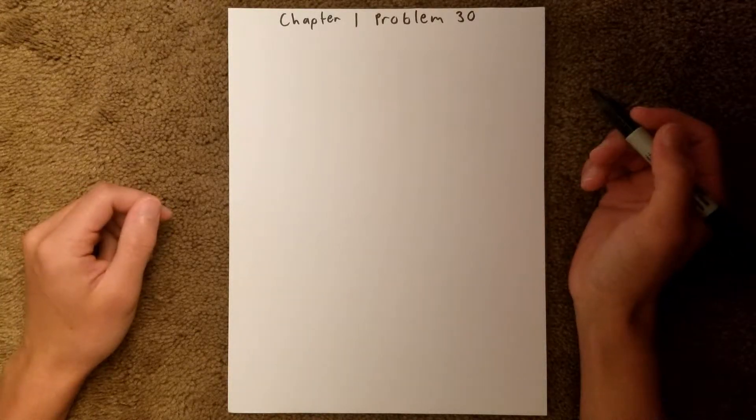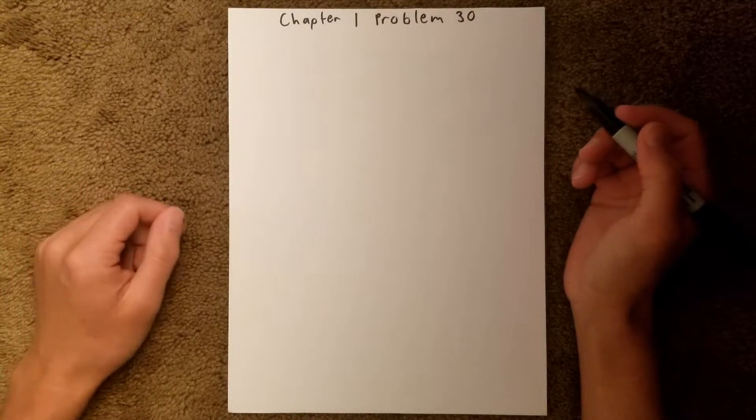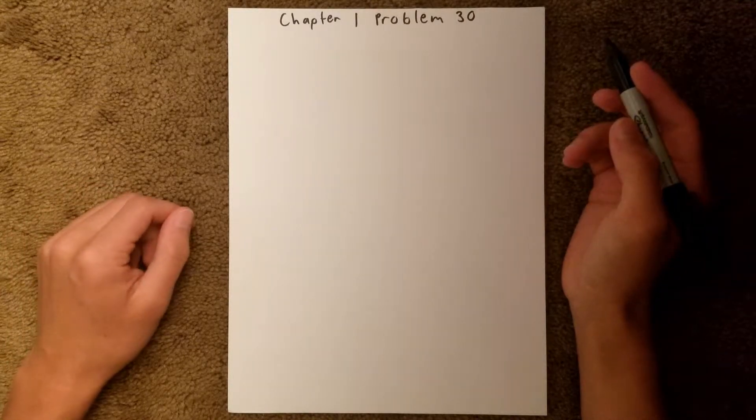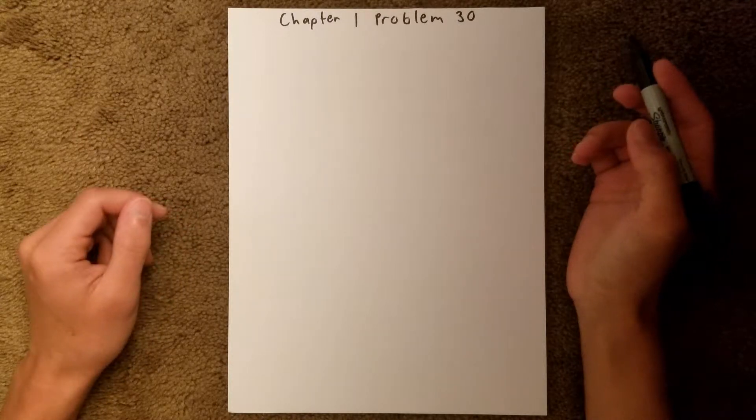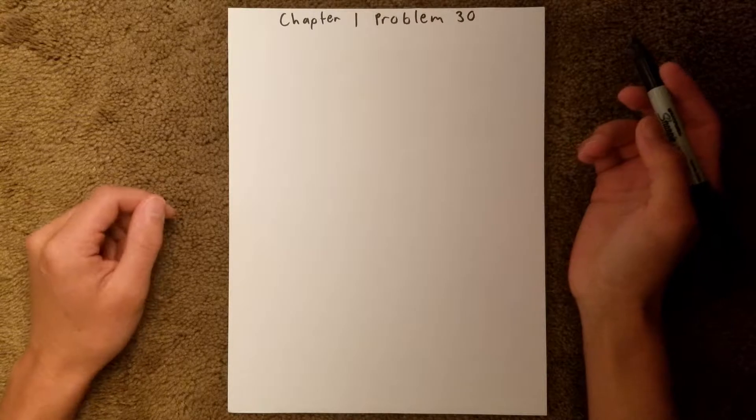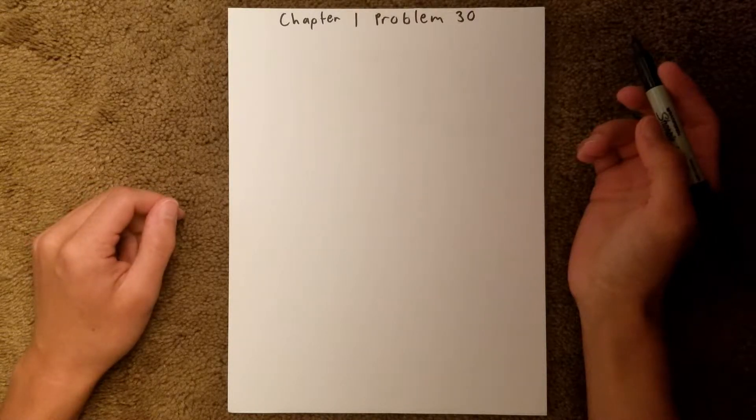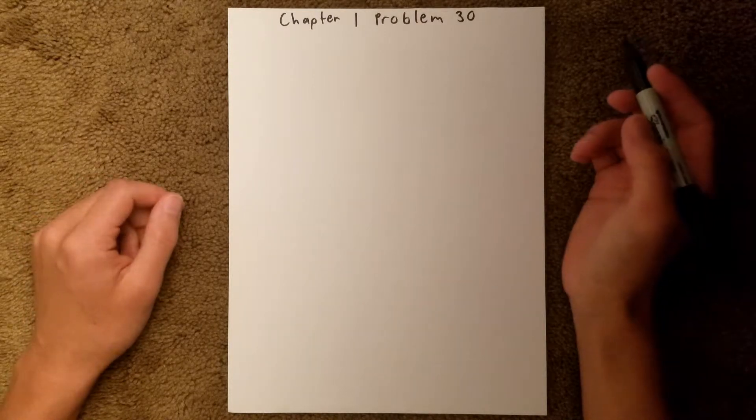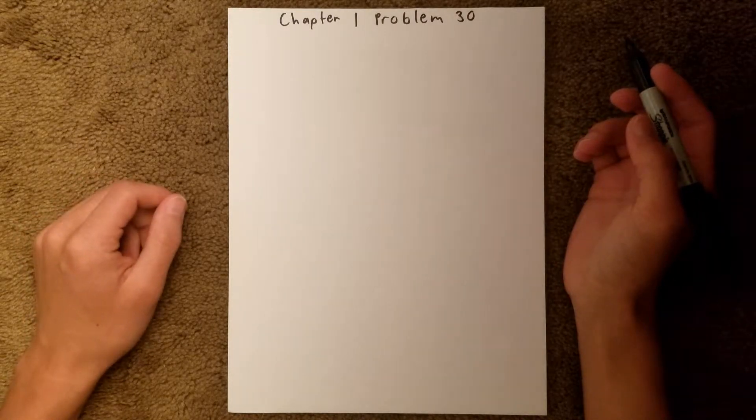Chapter 1 is all about chemical measurements, and in Problem 30, we are trying to make a solution of boric acid. We are given the molarity and the volume of that solution, and we are asked how many grams of boric acid needs to be used in order to make that particular solution, and then we are asked what kind of flask that solution should be prepared in.